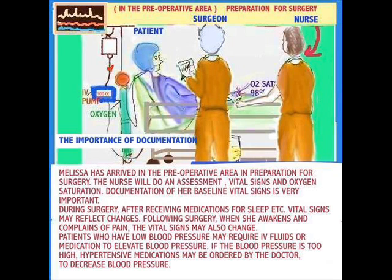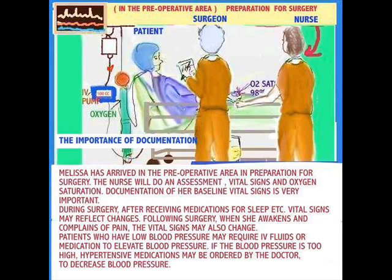Following surgery, the patient is taken to the post-operative area. Blood pressure, oxygen saturation, and IV fluids are monitored. If they're dehydrated, extra fluid is given. If the blood pressure is high, medications might be given. Everything is documented — whatever medications are given, whatever blood pressure reading served as the baseline that prompted you to medicate the patient, or in the case of low blood pressure, whatever reading caused you to give IV fluids.